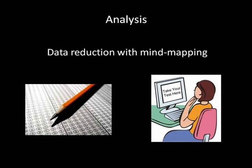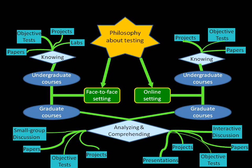Following each interview, the transcript was read and re-read to get a feeling of what was being said. A mind map was created to detail participants' responses to each anchor question. The data reduction process is illustrated in the mind maps associated with both the obsolete and emerging technology. In the mind maps, the thickness of the line correlates with the number of respondents giving a similar reply. The interview started by asking participants to share their philosophy about assessment of student learning and how they assess learning. All participants taught both undergraduate and graduate students in both the face-to-face and online environment.